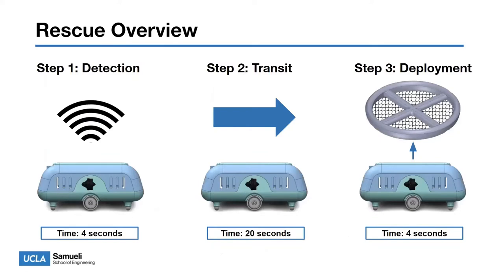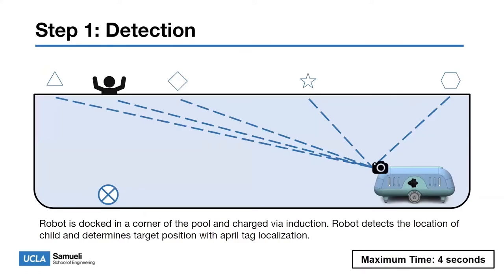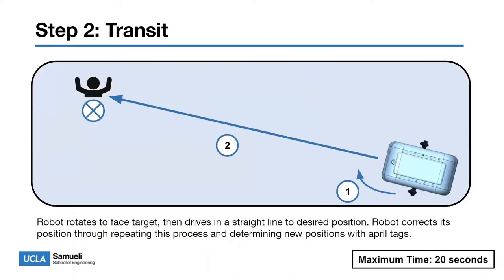The rescue process takes place in three steps. First is detection where the robot determines the position of the child and the target location, taking four seconds. Second is transit where the robot moves to the position directly below the child, taking an estimated 20 seconds. Third is deployment where the robot deploys the buoy and deployment module, taking four seconds for inflation and the buoy rising to the pool surface.